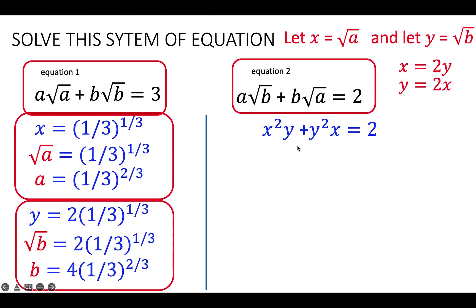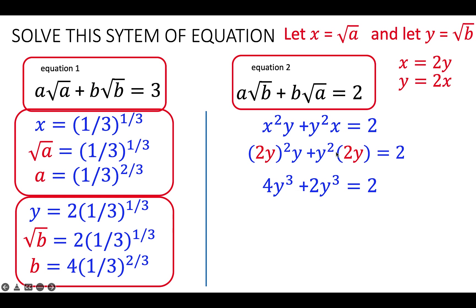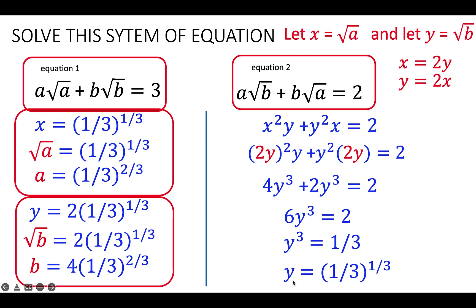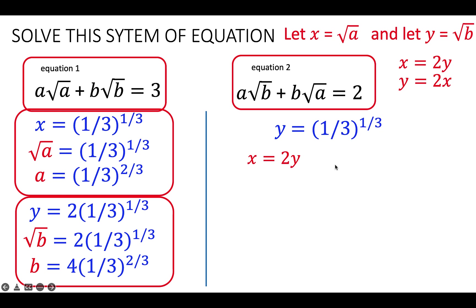Now let's use equation 2 with X equals 2Y. Substituting X equals 2Y: X squared becomes (2Y) squared, and X becomes 2Y. Simplifying gives 4Y cubed plus 2Y cubed equals 2, so 6Y cubed equals 2. Dividing both sides by 6 and taking the cube root gives Y equal to (1/3) to the 1/3. Since X equals 2Y, then X equals 2 times (1/3) to the 1/3.